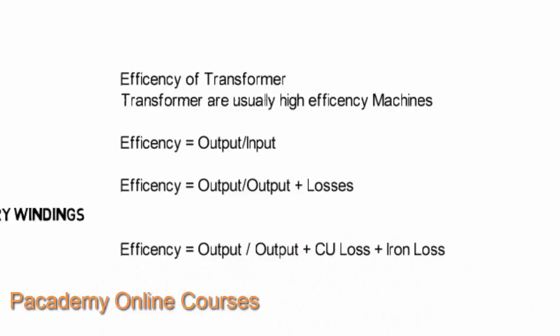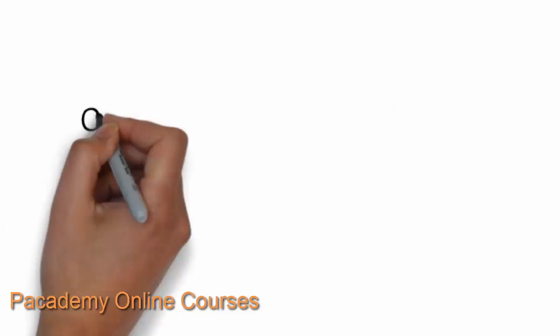The efficiency of the transformer is given as output divided by input, which is the efficiency of any machine. The input of any machine can be given as the output plus the losses. So the efficiency of the transformer can be written as output divided by output plus copper losses and the iron losses or magnetic losses. The output and input in this case are measured in kilowatts.